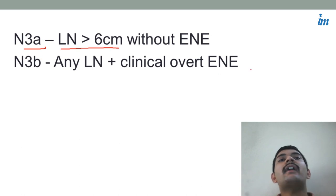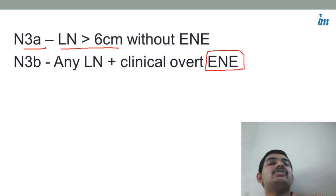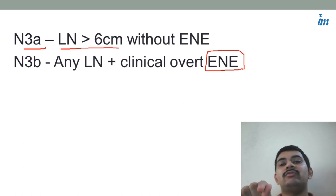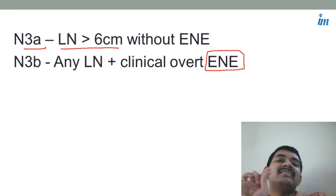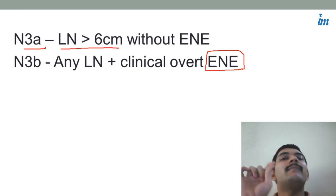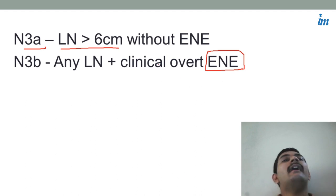And if you are having clinically overt extra nodal invasion — meaning you can detect it on palpation — the node is quite irregular. Normally if there is metastasis, the node should feel like a hard, regular seed. But if there is extra nodal invasion, it will be quite irregular and surroundingly adhered. So that will come under N3B.